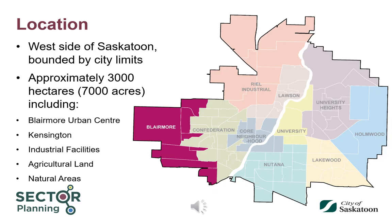The Blairmoor Sector is located on the far west side of Saskatoon, bounded by city limits and comprising approximately 3,000 hectares of land. The Sector includes the Blairmoor Urban Centre, formerly known as Blairmoor Suburban Centre, which includes the Shaw Centre, two high schools, and a mixture of commercial, institutional, and residential development.